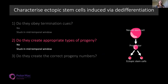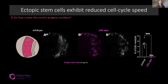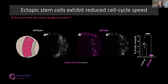Lastly, we wanted to see whether the ectopic stem cells created the correct number of progeny. To do this, we did an EdU pulse-chase assay comparing the amount of progeny from wild-type neurostem cells versus ectopic neurostem cells. We found a significant reduction in the amount of progeny created by these ectopic stem cells compared to wild-type, suggesting they also have a reduced cell cycle speed.